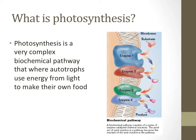Photosynthesis can be defined as a complex biochemical pathway through which autotrophs use light energy to make their own food. A biochemical pathway is a series of reactions where the product of one reaction is consumed in the next reaction. In essence, it's a chemical chain reaction. The picture on the right shows how a biochemical pathway works. Note how the starting material changes in shape and color as the different enzymes do their thing.